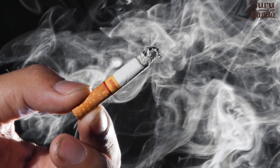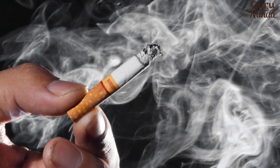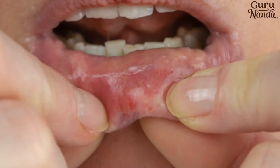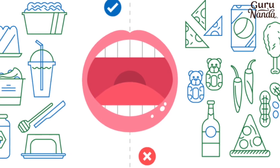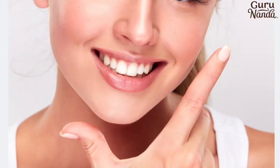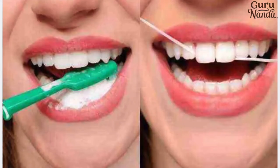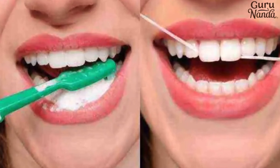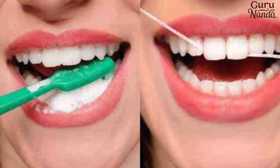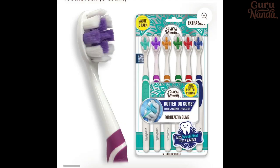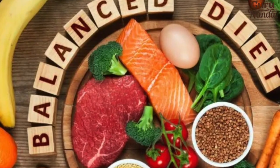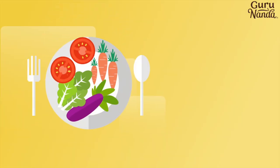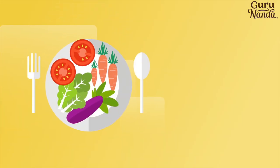Smoking and tobacco use can irritate the oral mucosa, leading to ulcer formation. To prevent canker sores, maintain oral hygiene — brush and floss regularly to prevent trauma and infection. Use a soft-bristle toothbrush to minimize irritation, and ensure adequate intake of vitamins and minerals, focusing on vitamins, iron, and folate.